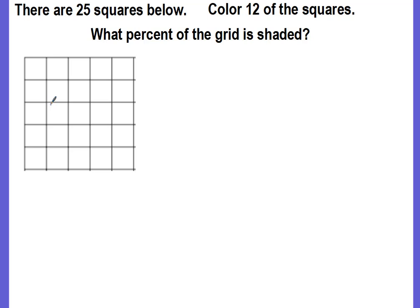But what happens when we don't have a 10 by 10 grid? In this example, we have a 5 by 5 grid, which means that there are 25 squares. And we want to color 12 of the squares. Okay, I've now colored 12 squares. Is my percent going to be 12%? Well, I just shaded 12, but was it 12 out of 100 squares? No, it was only 12 out of 25 squares.